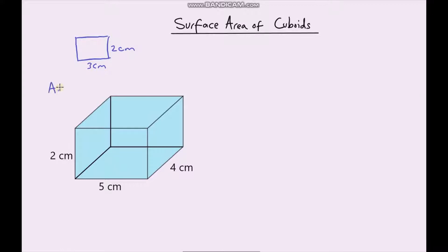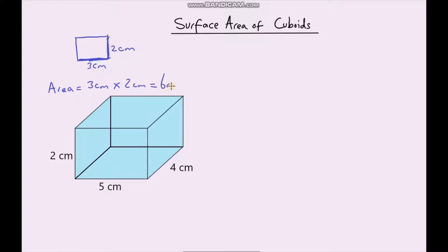So how do we calculate the area of this rectangle? Well we take the base, so 3cm, and we multiply it by the height, which is 2cm, and that gives us 6cm².